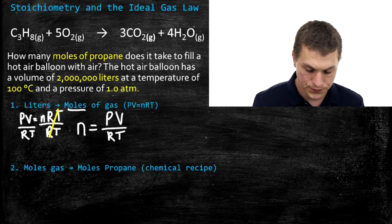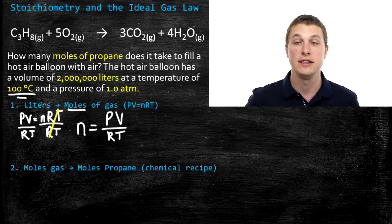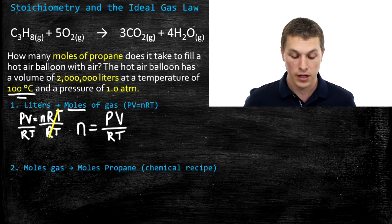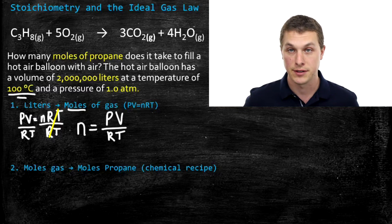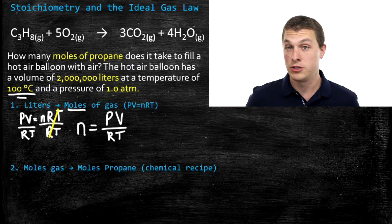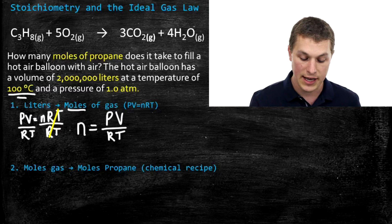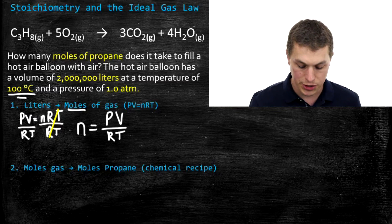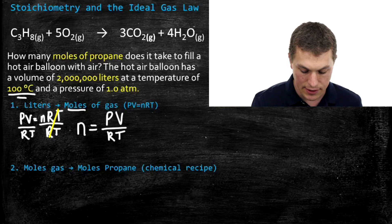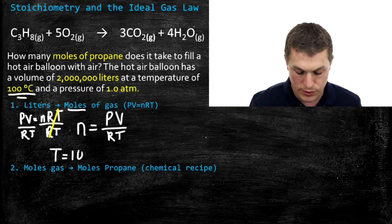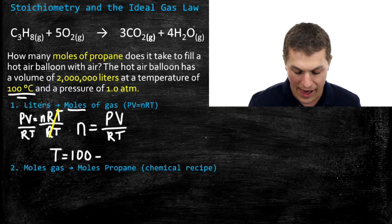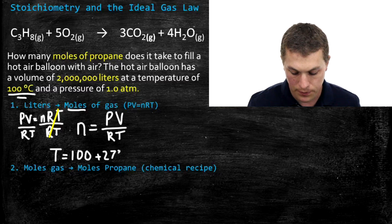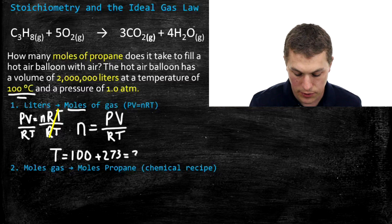One important thing to remember: the ideal gas law always needs temperature in Kelvin, and our temperature is currently in Celsius. This is a common issue in ideal gas law problems — you need to make sure you're in Kelvin before you proceed. Converting 100 degrees Celsius to Kelvin: we take 100 and add 273, giving us 373 Kelvin.